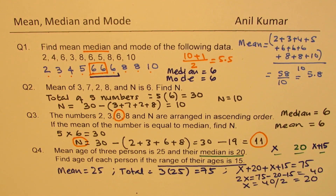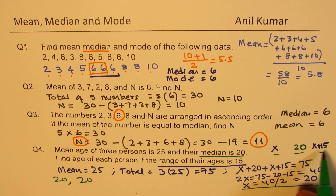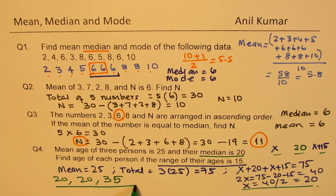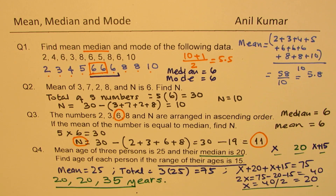So x is 20, and therefore the ages are 20, 20, and 35 (which is 20 plus 15). In this case mode is also 20. These are very simple values but these are the most important questions based on mean, median, and mode. I hope you understand the concept — feel free to write your comments, share your views, and if you like and subscribe to my videos that would be great. Thanks for your time and all the best.